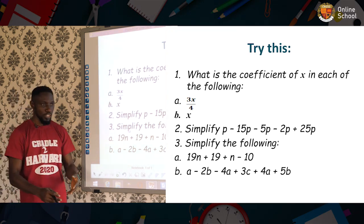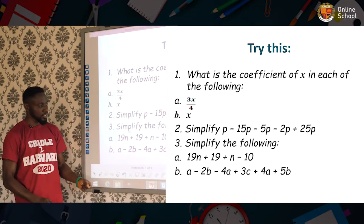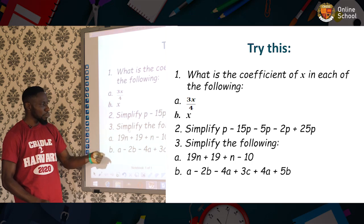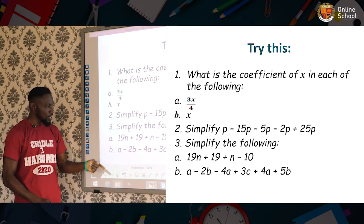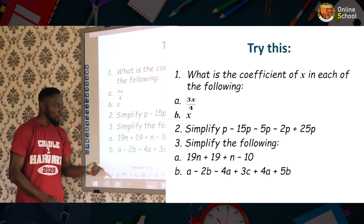Don't forget grouping of terms that we just learned. And thirdly, number three says simplify the following. A says 19n + 19 + n - 10. Also, b says a - 2b - 4a + 3c + 4a + 5b.